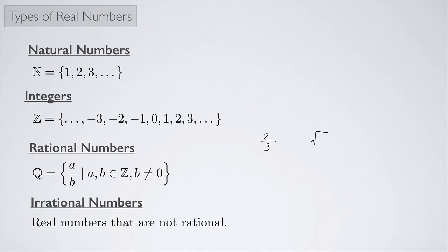And the square root of four. Okay, well, the square root of four is the same thing as two. That's definitely rational because I can write two as two over one.